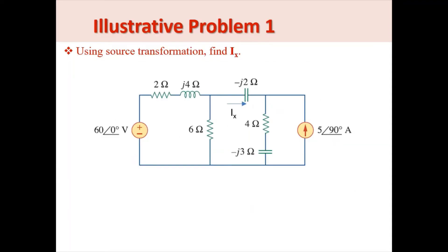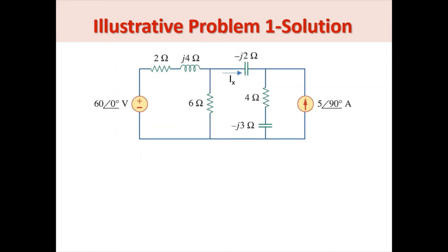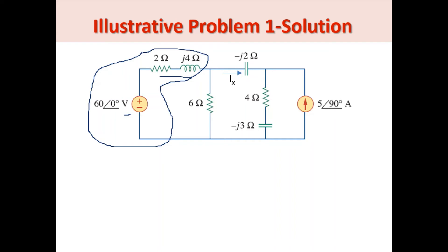Let's have an example of source transformation. In this problem, we're asked to solve for the current I sub X through the capacitor minus J2. To apply source transformation, we need to examine the circuit for a voltage source that is in series with an impedance or a current source that is in parallel with an impedance. We notice that this voltage source is in series with an impedance of 2 plus J4, so this part of the circuit can be transformed into a current source.